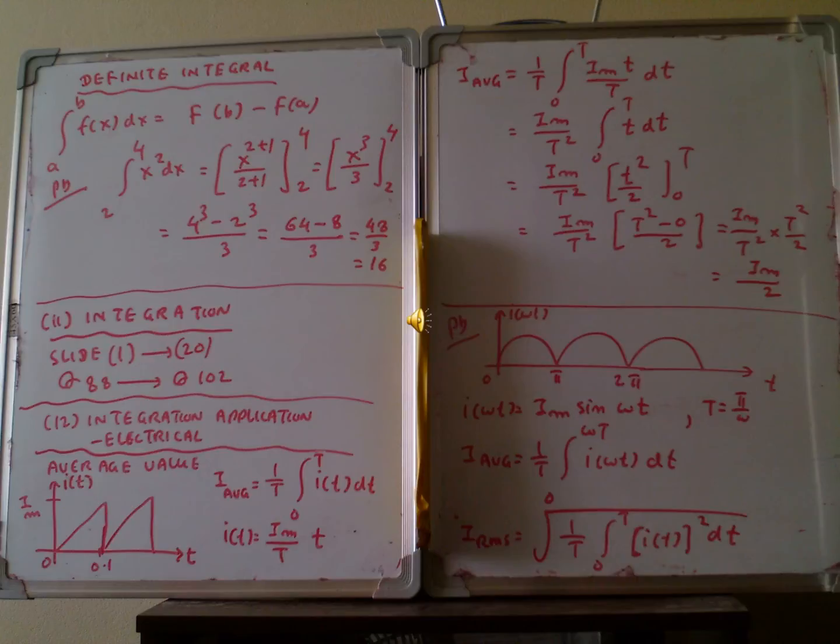i average equals 1/T integration from 0 to T of (i_m × t/T) dt. So i_m/T is constant, we take out i_m/T². The integration becomes 0 to T of t dt, which integrates to t²/2.